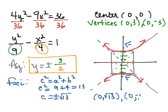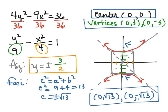So the coordinates are (0, square root of 13) and (0, negative square root of 13). So each one of these is a focus. This is the center. These are the vertices, and there are our asymptotes.